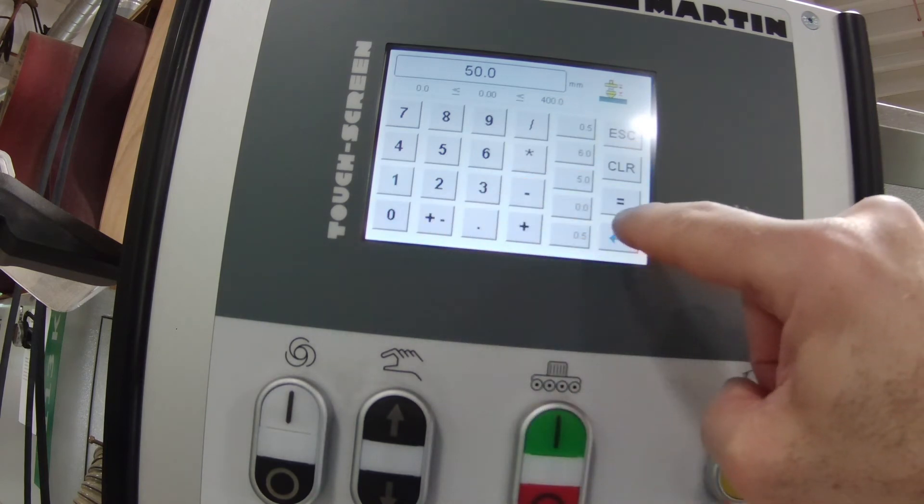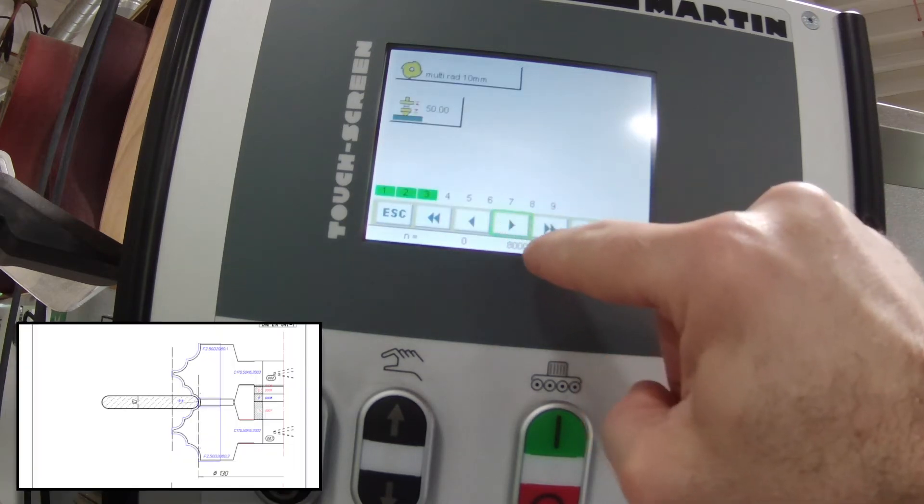Next, I have this cutter sitting on a 50 millimeter collar. That's what I typically leave in the machine. So I tell it that that spacer is 50 millimeters and move on to the next screen.